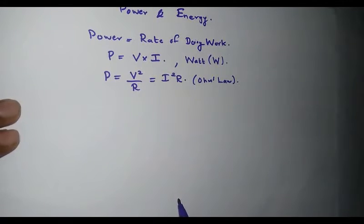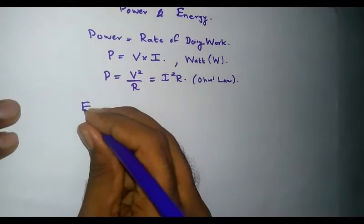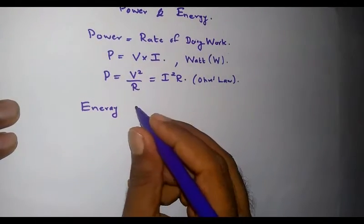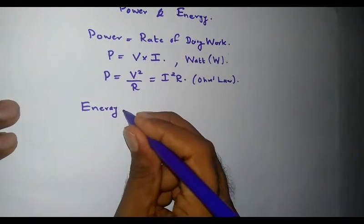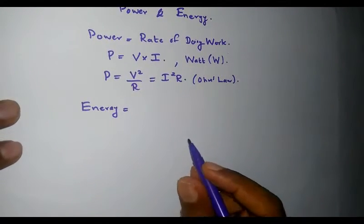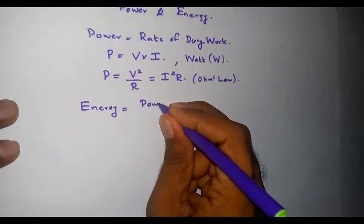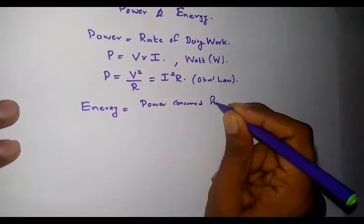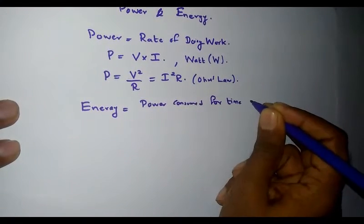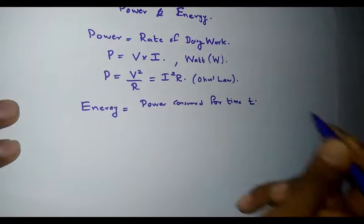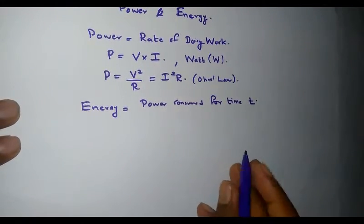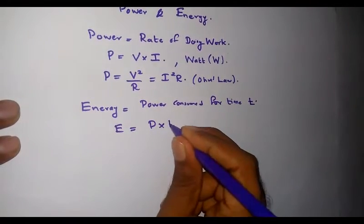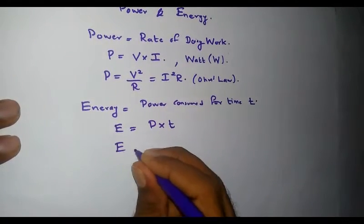Next is energy. We know that power is the rate of doing work, and energy is defined as the power consumed for a specific period of time - that is, the power consumed for time T. Energy E is given by the equation power times time.